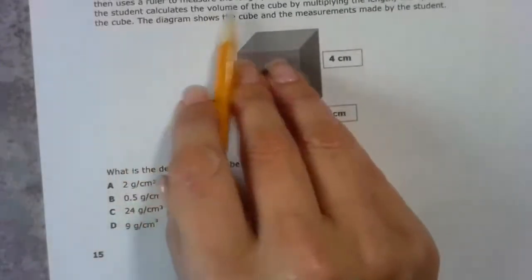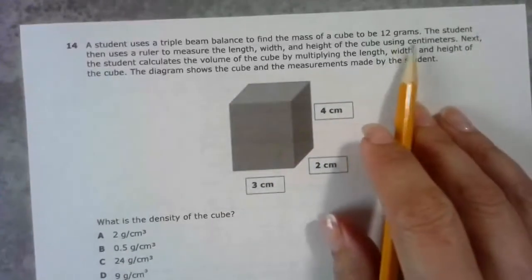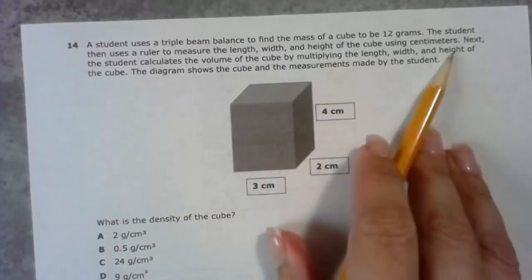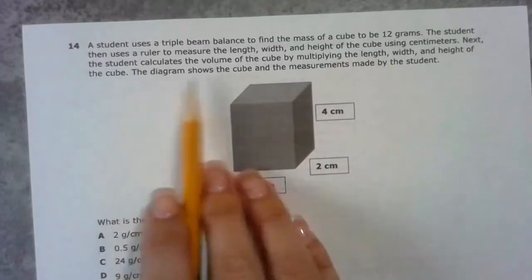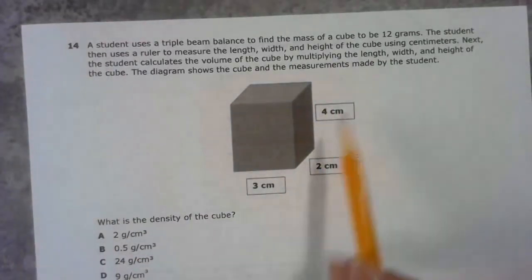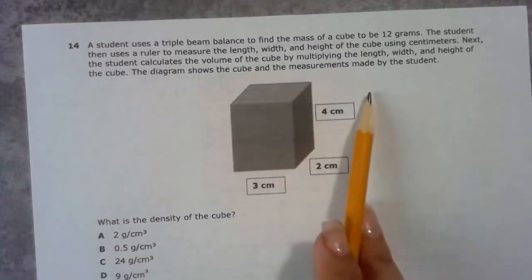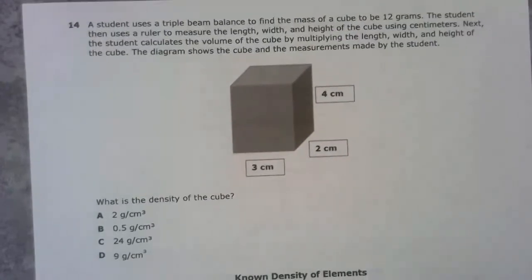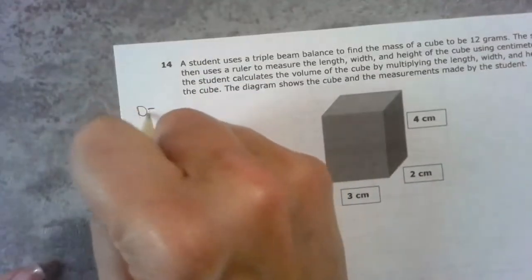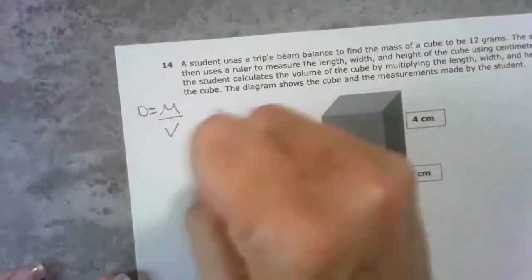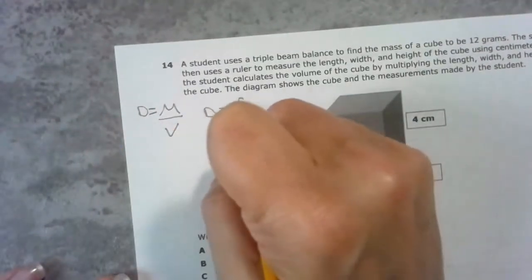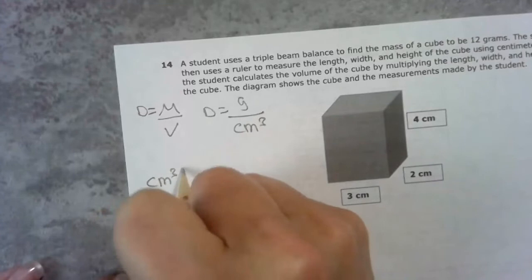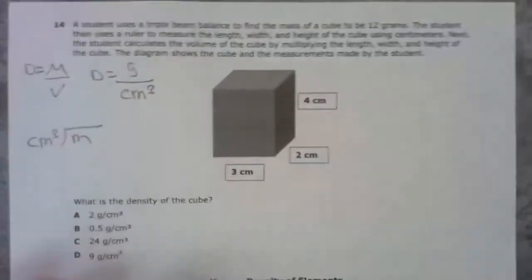A student uses a triple beam balance to find the mass of a cube to be 12 grams. The student then uses a ruler to measure the length, width, and height of the cube using centimeters. Next, the student calculates the volume of the cube by multiplying the length, width, and height. The diagram shows the cube and the measurements made by the student. What is the density? Density is mass divided by volume. That is in grams over cubic centimeters, and my volume goes on the outside because that is the denominator.